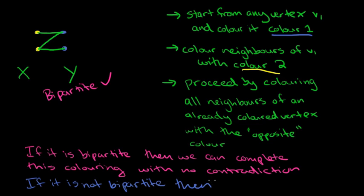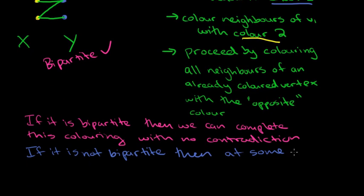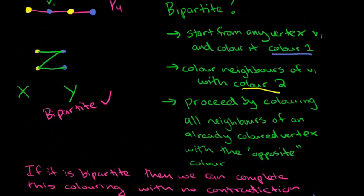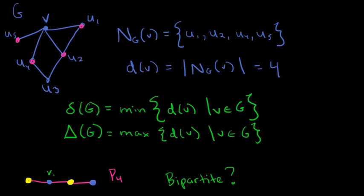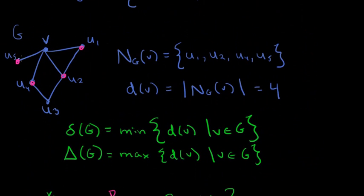However, if it is not bipartite, then at some point, a vertex will get both colors. So that will be the problem. And let's just take a look at an example for which that happens. In fact, just up here, we had an example that was not going to work out. So let's try it.